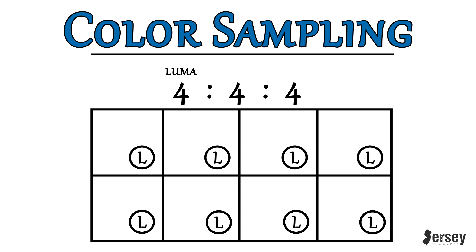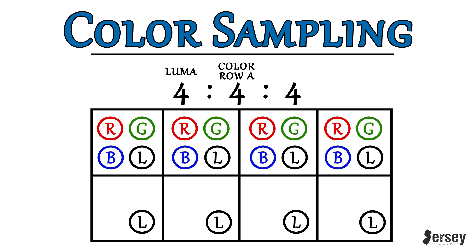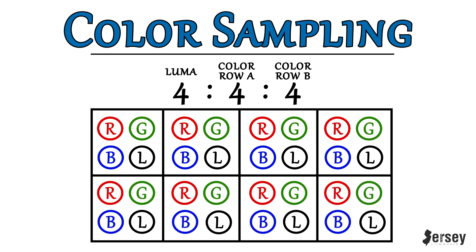The luma channel is generally always sampled because our eyes are much more sensitive to light, and we would easily notice if you started cutting some of those channels out. The second number, 4, is the color in row A. If this number is 4, it's going to sample the red, green, and blue channels in all 4 pixels. And the same thing goes for the last number, 4, in row B — if this number is 4, it will capture the red, green, and blue channels in every pixel of row B. So in a 4:4:4 image, every channel of every pixel in every row is sampled.